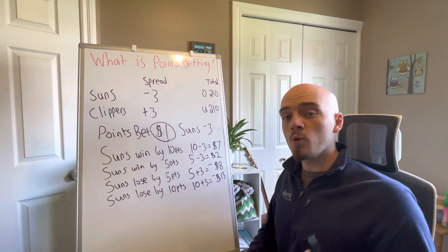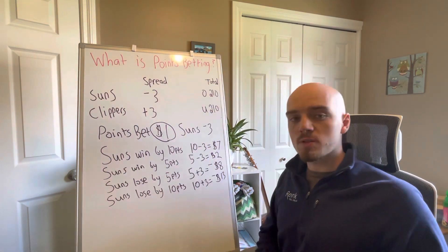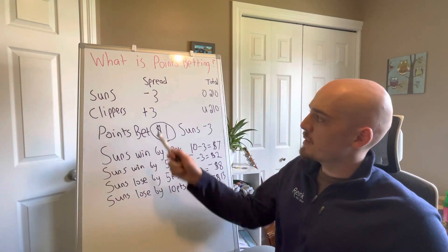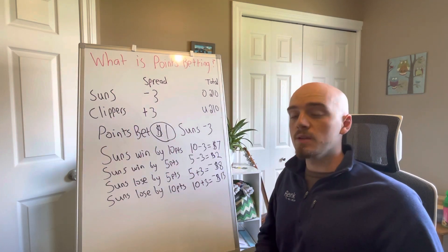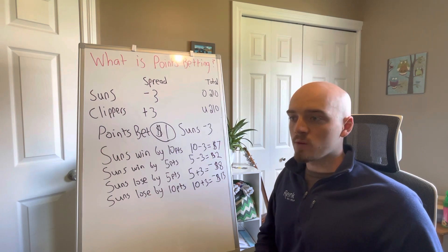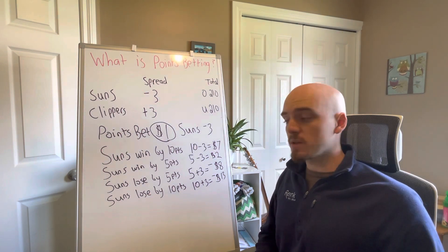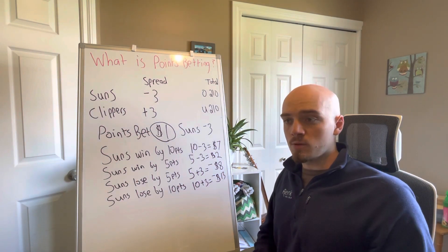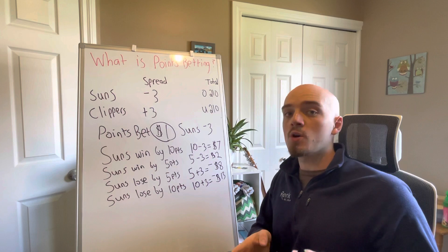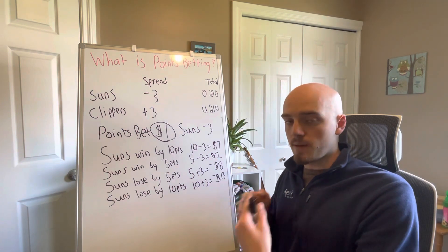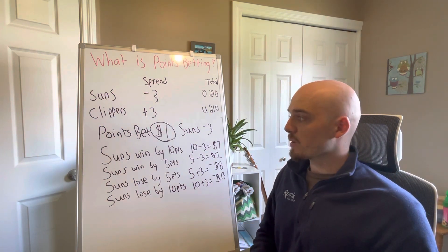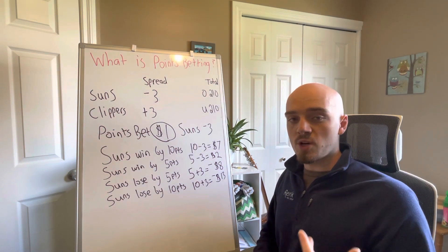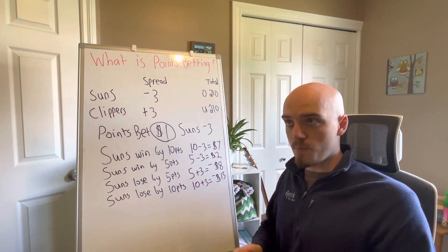One cool thing about this is you can also set a stop loss. So if you're points betting the Suns minus three and you don't want to lose more than five bucks, you can set your stop loss at five so that you couldn't lose more than five bucks. But you also won't be able to win more than five bucks based on the outcome of the game. It kind of takes a little bit away from the points betting, but it is a good risk adjustment to make if you only want to wager a certain amount.